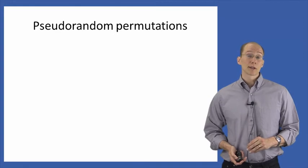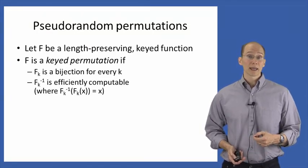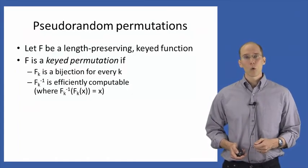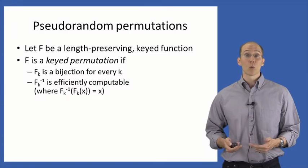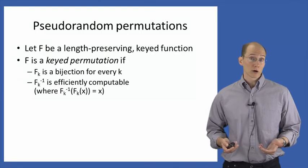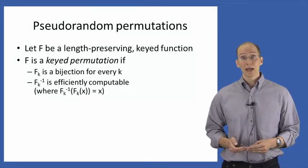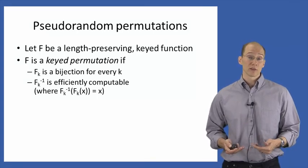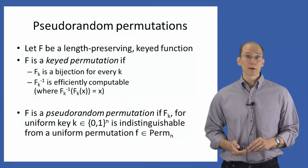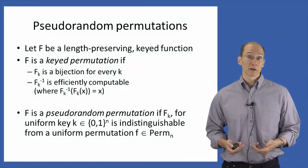Next, let's talk about pseudorandom permutations. If F is a length-preserving keyed function, we say F is furthermore a keyed permutation if two conditions hold: first, f_k must be a bijection — 1-to-1 and onto — for every possible key k, meaning f_k is a permutation; and second, f_k inverse must be efficiently computable given the key k. We say F is a pseudorandom permutation if f_k for a uniform key k is indistinguishable from a uniform permutation chosen from the set of all permutations on n-bit strings.